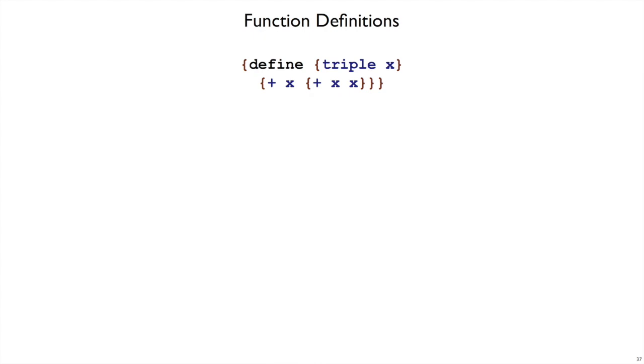So we have function definitions, and a function definition is not an expression, but it always has a particular shape. It's always going to have define, and the name, and the argument name, and the body.